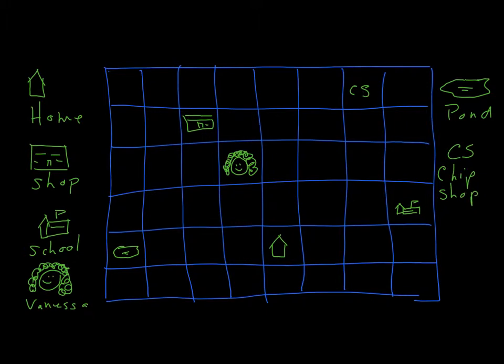Okay, so the idea is that we have to give Vanessa simple directions to get to these different places. And when I say simple directions, I mean simple directions like up, down, left, right.